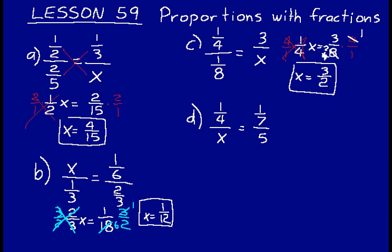Let's do one more problem. We'll cross multiply here and we'll get one seventh times x is equal to one fourth times five, which would be five fourths.